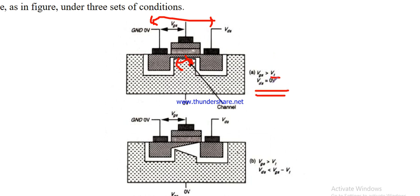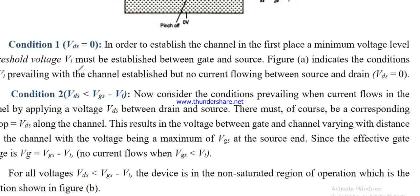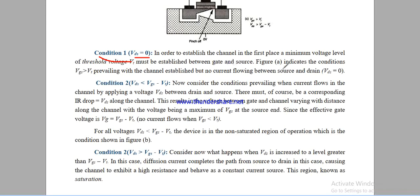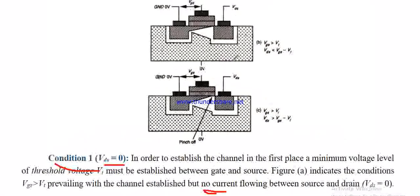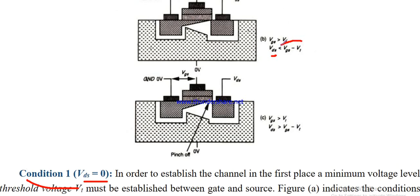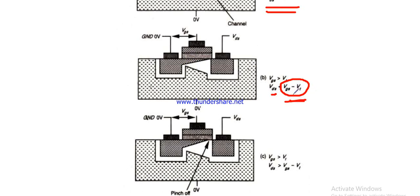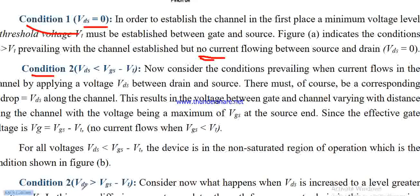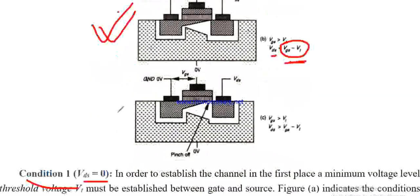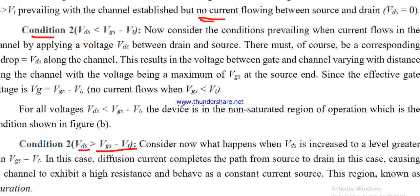The first condition is VDS equal to 0. When VGS is applied, a channel forms. When VDS is less than VGS minus V_threshold, this is the linear region. When VDS is greater than VGS minus V_threshold, this is the saturation region.